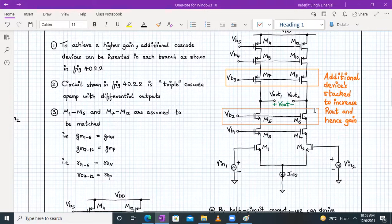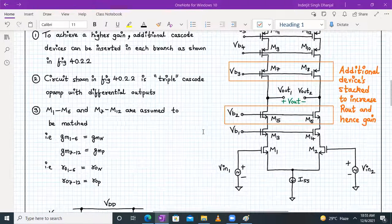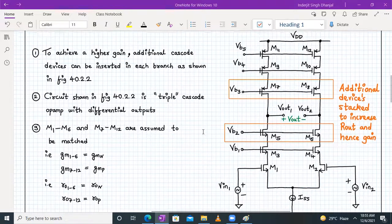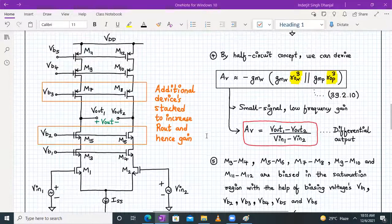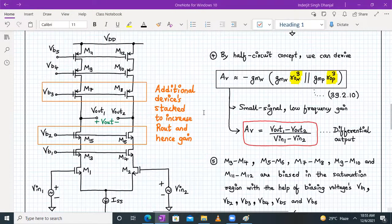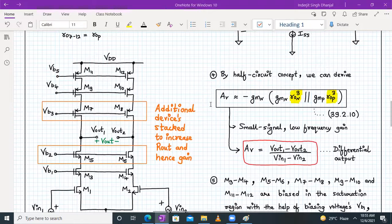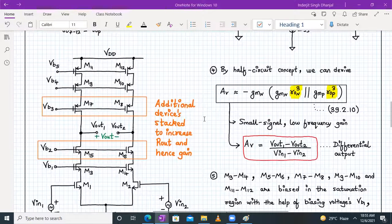M1 to M6 transistors are matched, and M7 to M12 transistors are matched. We have six NMOS transistors and six PMOS transistors. Gm of M1 to M6 we call gmn, gm of M7 to M12 we call gmp, ro1 to ro6 we call ron, and ro7 to ro12 we call rop. We can apply the half-circuit concept because this is still a differential amplifier. The voltage gain will come out to be approximately minus gmn times gmn times ron cubed, parallel to gmp times rop cubed.